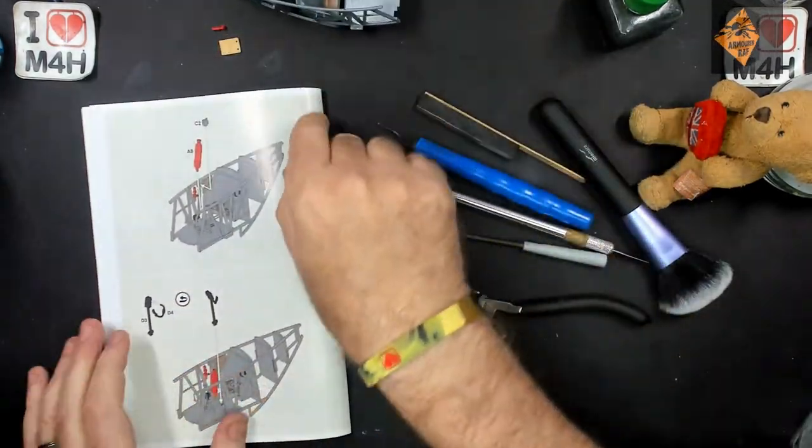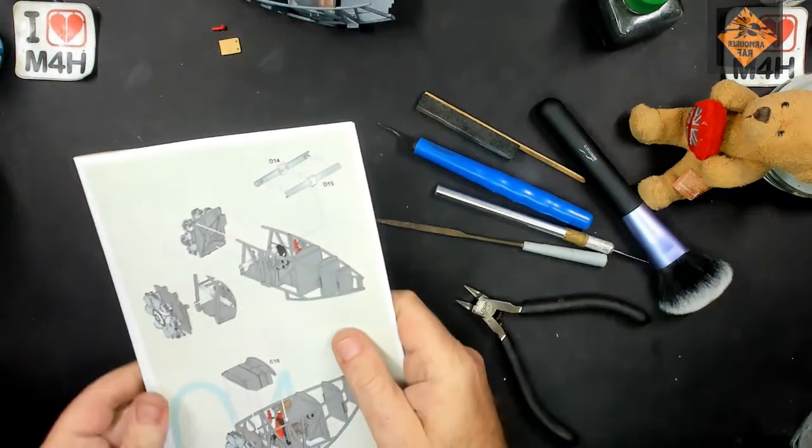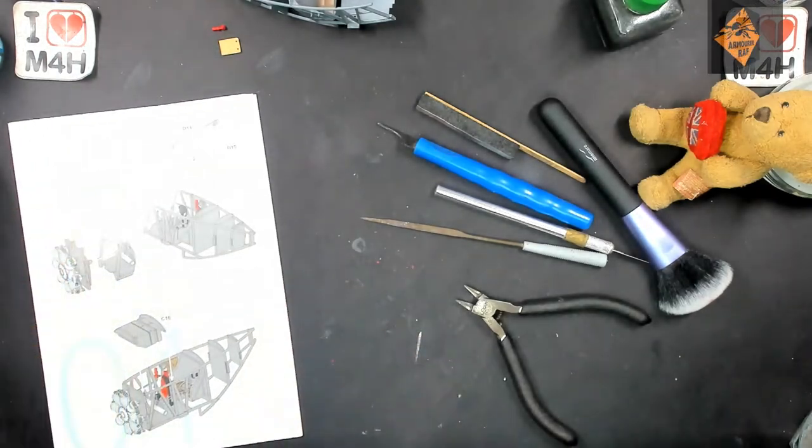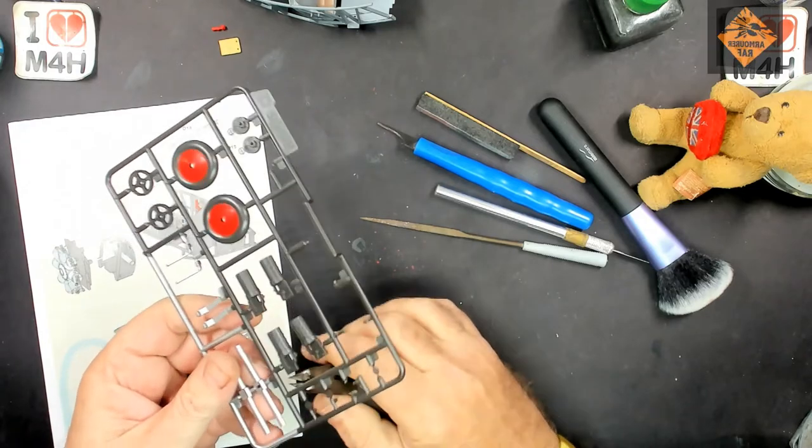There we have the dials and theories and joystick prepped and ready for priming. I tell you what, that joystick took a bit of working out, but I got there in the end. Next, let's get the exhaust system glued and ready for priming.